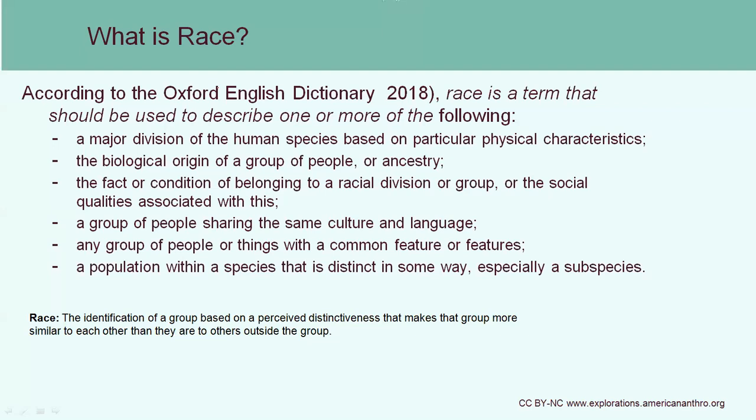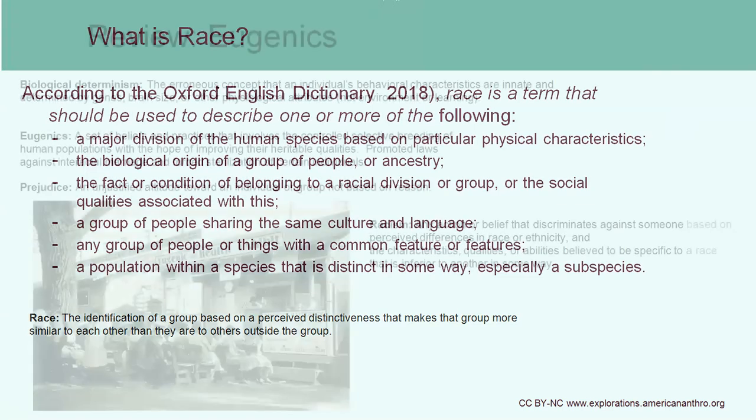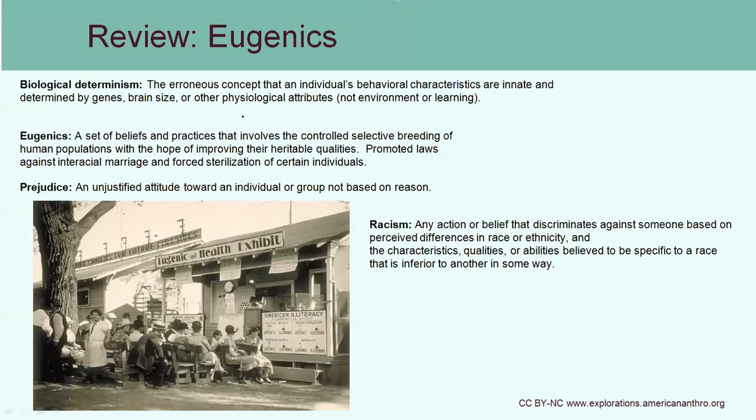Sometimes people group each other by religious affiliation. And the important thing is that depending on your definition, the same individual might fall into multiple different categories. So there's a lot of variation in terms of how we define a person and what category we put them in. It's important to understand that race is not a set condition — it's something that is defined by our social background.